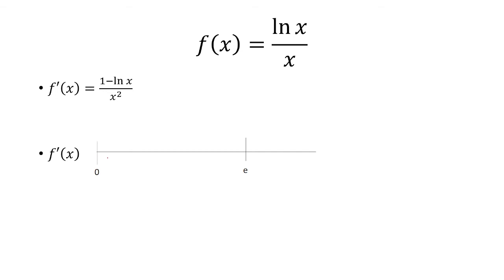Okay, so now let's draw our number line here. So this is our first derivative test. And we want to pick a value between 0 and e. So whatever you pick, let's say 1. ln of 1 is 0, so you have 1 over 1, which is positive.